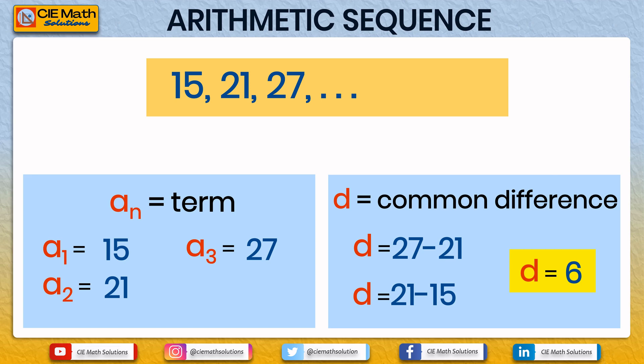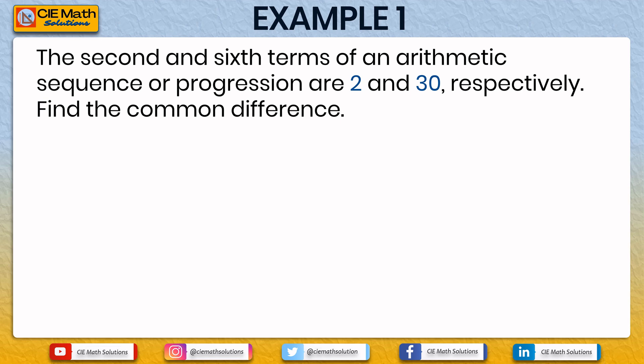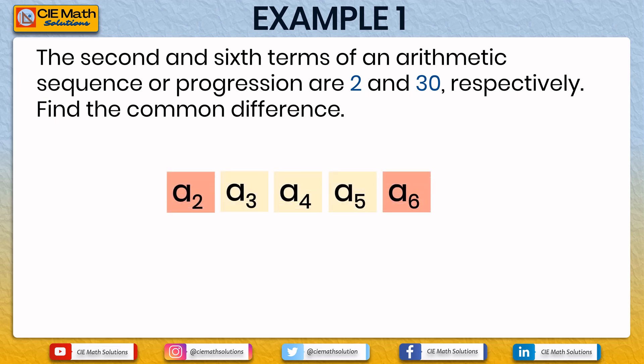Now let us explore the fastest way of finding the common difference given any two terms. For example, the second and sixth terms of an arithmetic sequence are 2 and 30 respectively. Find the common difference. To illustrate this, we have A2, A3, A4, A5, and A6, where A2 denotes the second term and A6 denotes the sixth term.